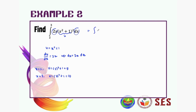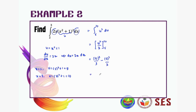We rewrite the integral with new lower limit 5 and upper limit 10: integral of u to the power of 2 du. Integrating gives u to the power of 3 divided by 3, from 5 to 10. Substituting: 10 cubed divided by 3 minus 5 cubed divided by 3, which gives 875 divided by 3.